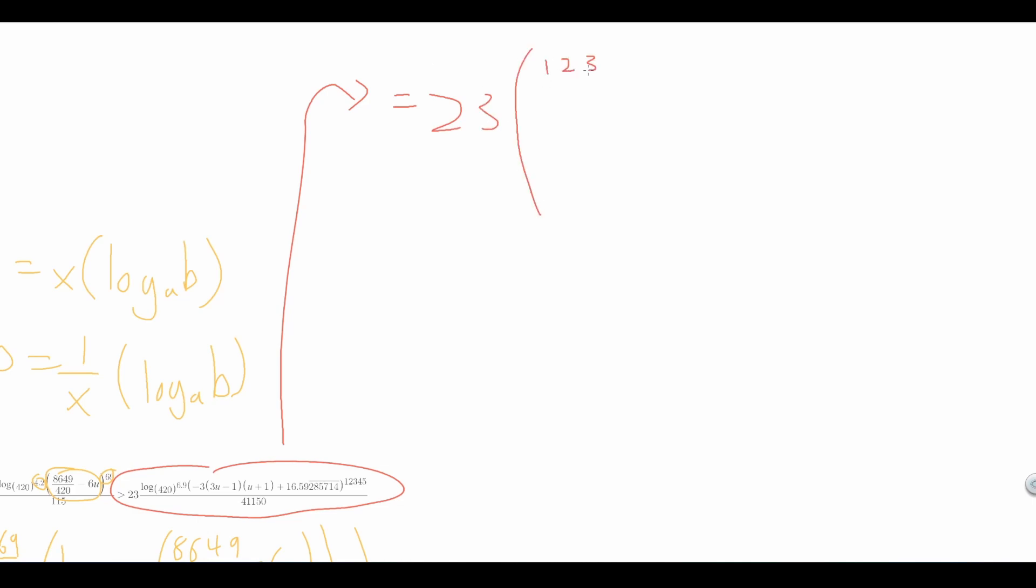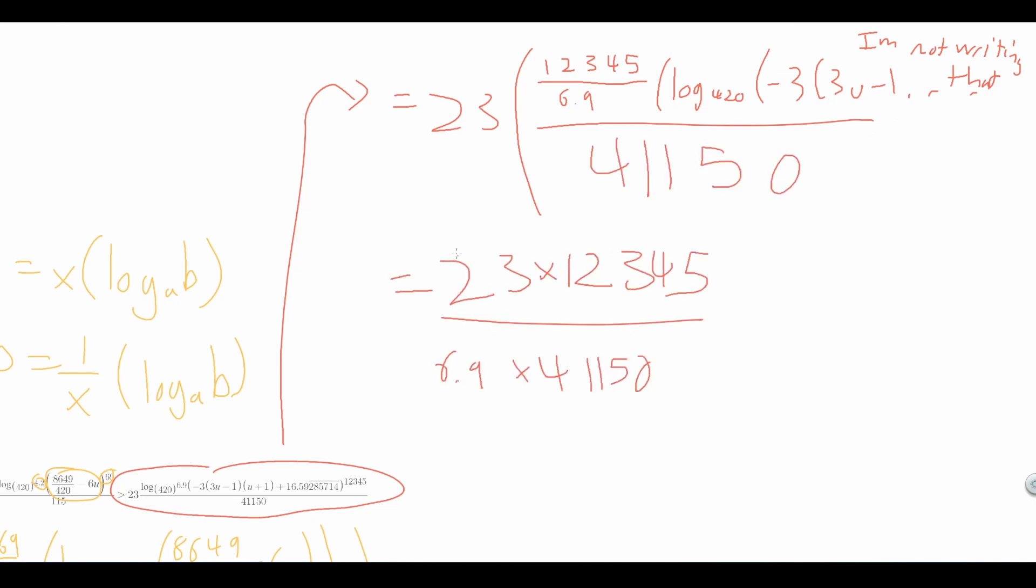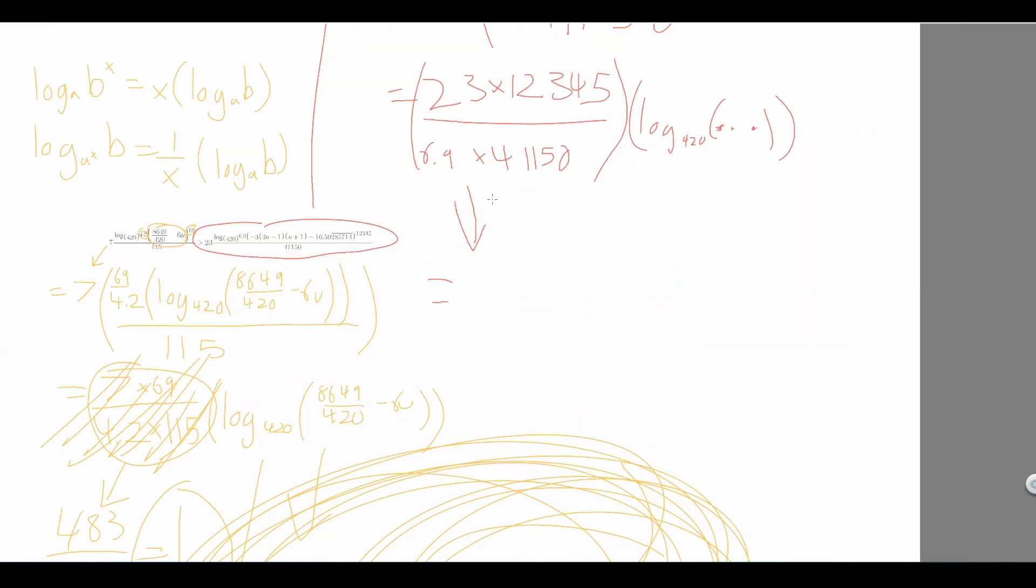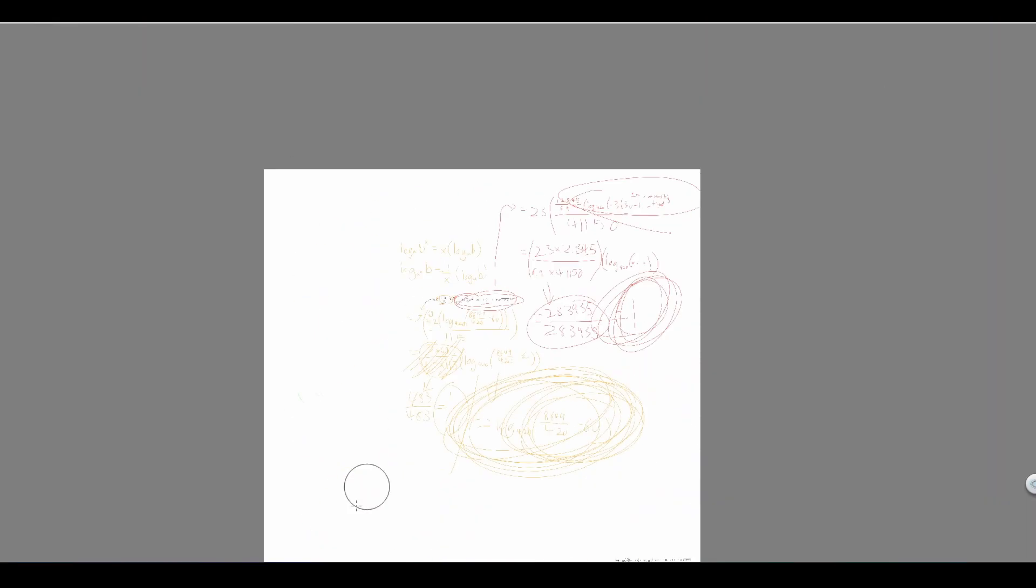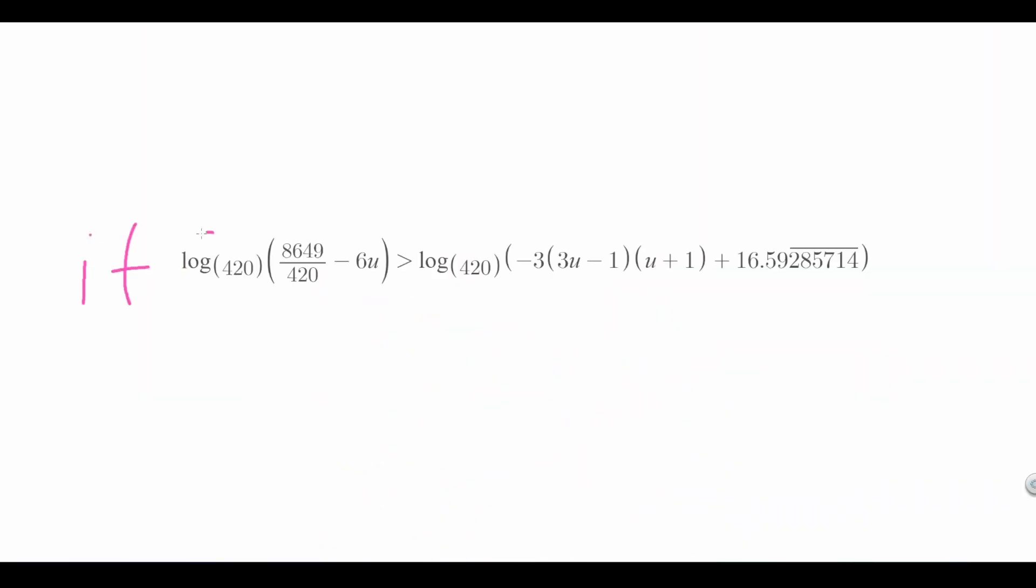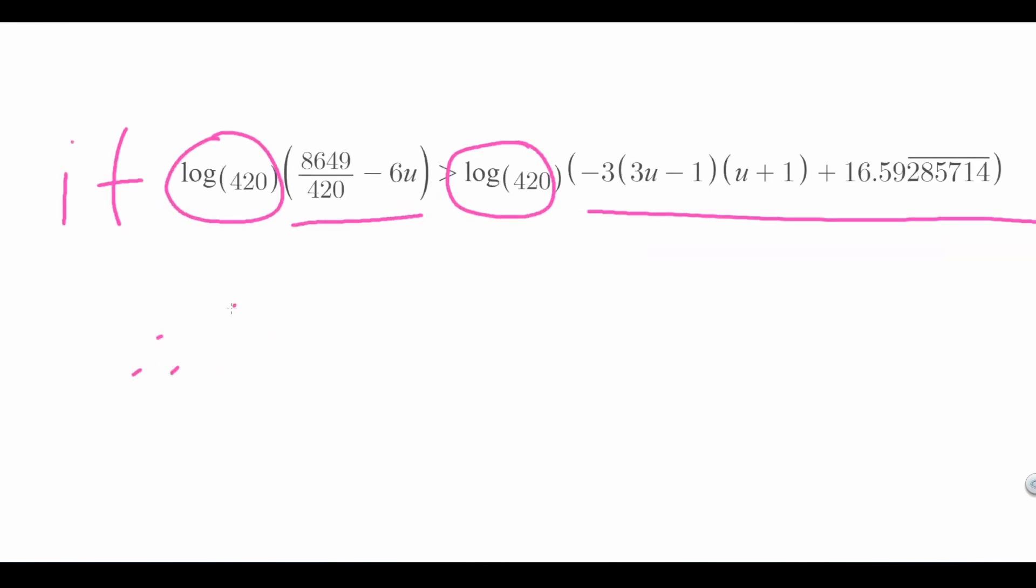Now we do the same thing for the other side. And we take out 12,345 and 6.9. This cancels as 23 times 12,345 divided by 6.9 times 41,150 which equals 1. Now we have this. Both of these sides have the logarithm to the base 420. And the left side is greater than the right. That must mean that the things inside the log on the left side must be greater than the stuff inside the log on the right. And this means that we will get this.